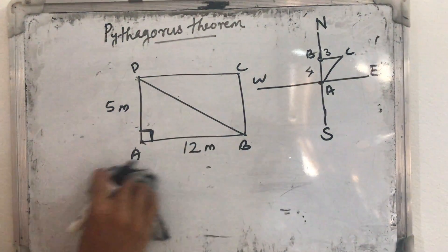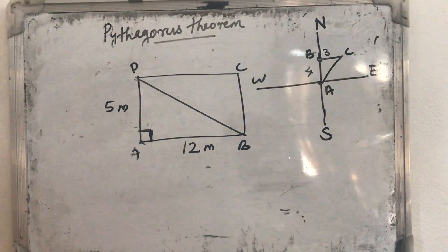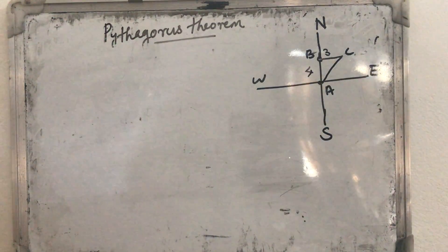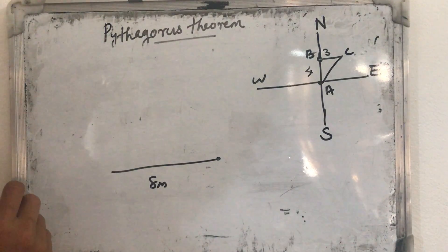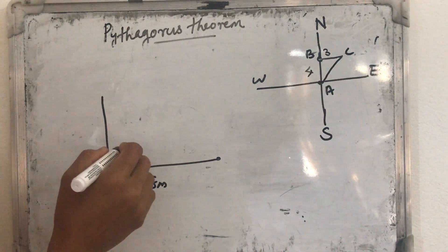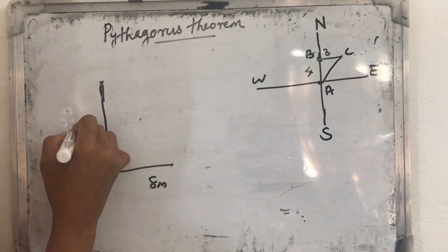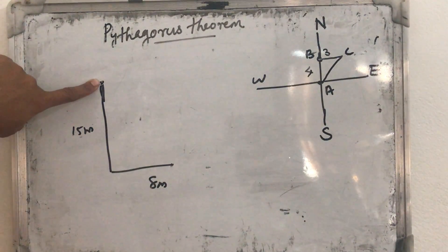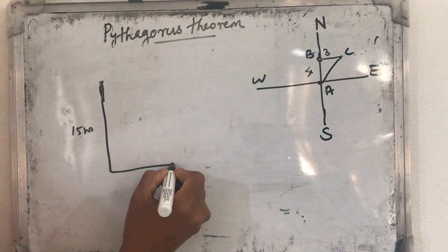Ninth question: Leela walked 8 meters west and 15 meters north to reach the opposite corner of a rectangular field. So Leela first walks 8 meters west from the starting point, then 15 meters north. Then another person, Lauline, walked from the same starting point diagonally to the opposite corner.